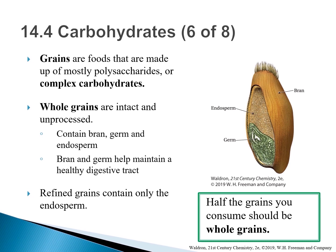Whole grain is intact and unprocessed. A single whole grain includes parts called the bran, the germ, and the endosperm. When you eat whole grain foods such as whole wheat bread, oatmeal, or brown rice, it includes all of these parts. The bran and germ are nutritious and help maintain a healthy digestive tract. When a grain is processed, only the endosperm remains — these refined grains have a softer texture and include white pasta, white bread, and many kinds of crackers, noodles, and tortillas, lacking the nutritional content of whole grains.